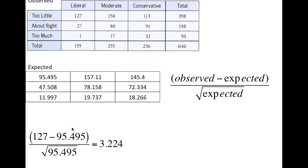For the first cell, we'd do 127 minus 95.495, divided by the square root of 95.495. The standardized residual would be 3.224. Now you're going to compare these across all cells, so it can be hard to say if that's big or small on its own. Similar to how we treat standard deviations, anything outside of two would be considered a fairly large standardized residual, so 3.224 is fairly big.